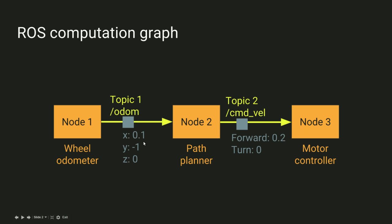The data that actually gets sent on the topics are called messages. Here the odometry is telling us that the robot is at this XYZ position and the path planner might say that the robot needs to go forward by 0.2 but not turn it at all. So those are messages.